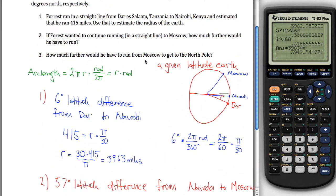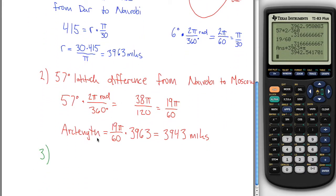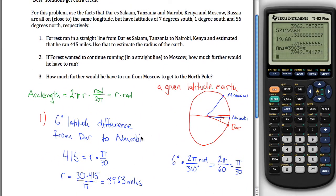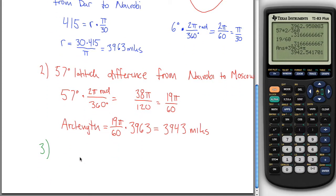Anyways, in part three, how much further would you have to run from Moscow to get to the North Pole? So, let's see, from Moscow to the North Pole, Moscow is at 56 degrees north. So, 90 minus 56 is 34 degrees difference from Moscow to the North Pole.